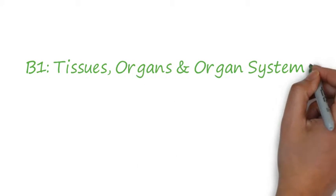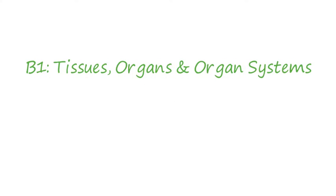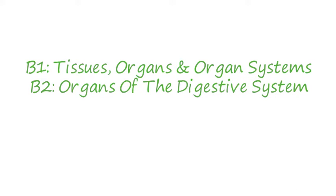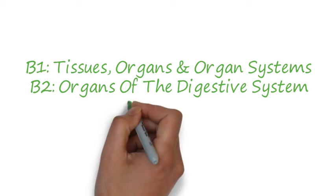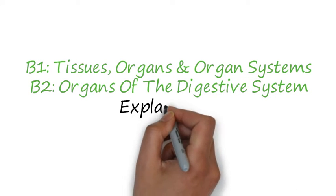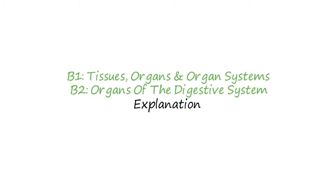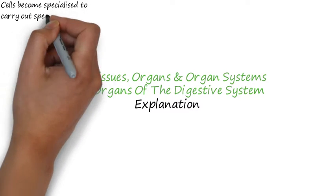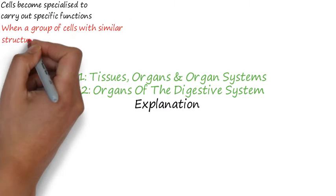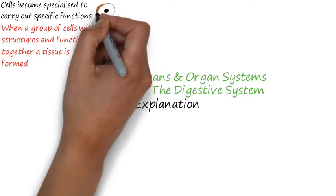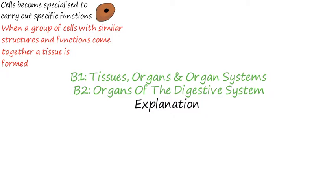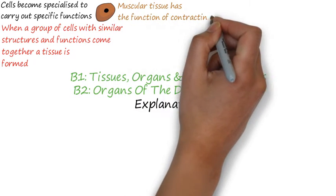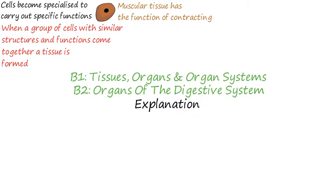We are going to try and understand how cells can come together and form organs. We know now that the cells become specialised to carry out specific functions. When a group of cells come together they form a tissue. A tissue is only formed when a group of cells with similar structures and functions come together. Muscular tissue has the function of contracting.